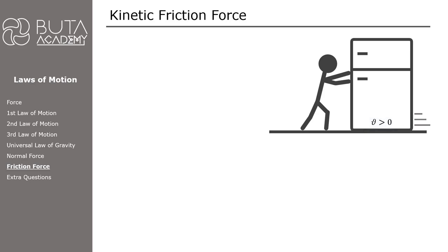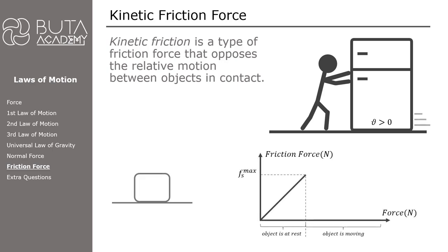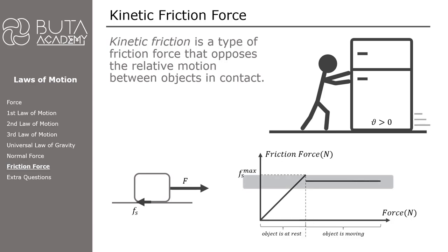We have managed to move the object. The friction force applied on this object while it is moving is called the kinetic friction force — it is a type of friction force that opposes the relative motion between objects in contact. Let's bring back the graph and the diagram. Now we only consider the part where the object is already moving. There is an applied force trying to pull it to the right, and friction force opposing the motion. As we have already passed the maximum static friction, it cannot increase anymore, but we can still increase the applied force. While the applied force increases, the friction force remains the same, giving us a complete graph representing the relation between friction force and applied force.